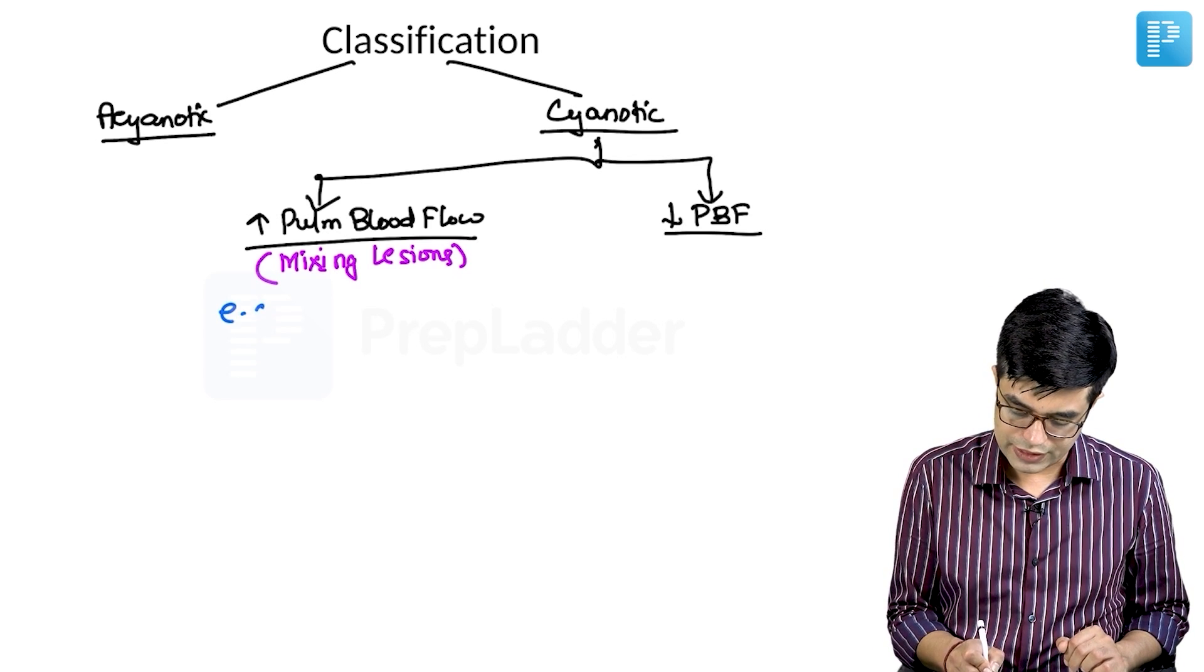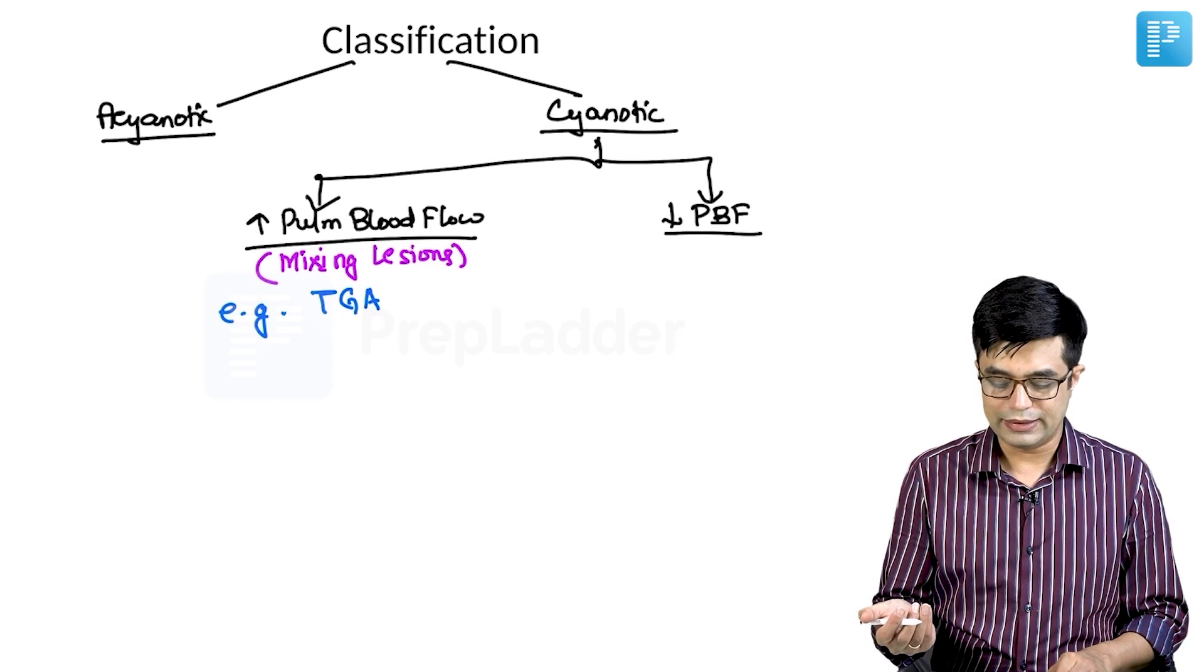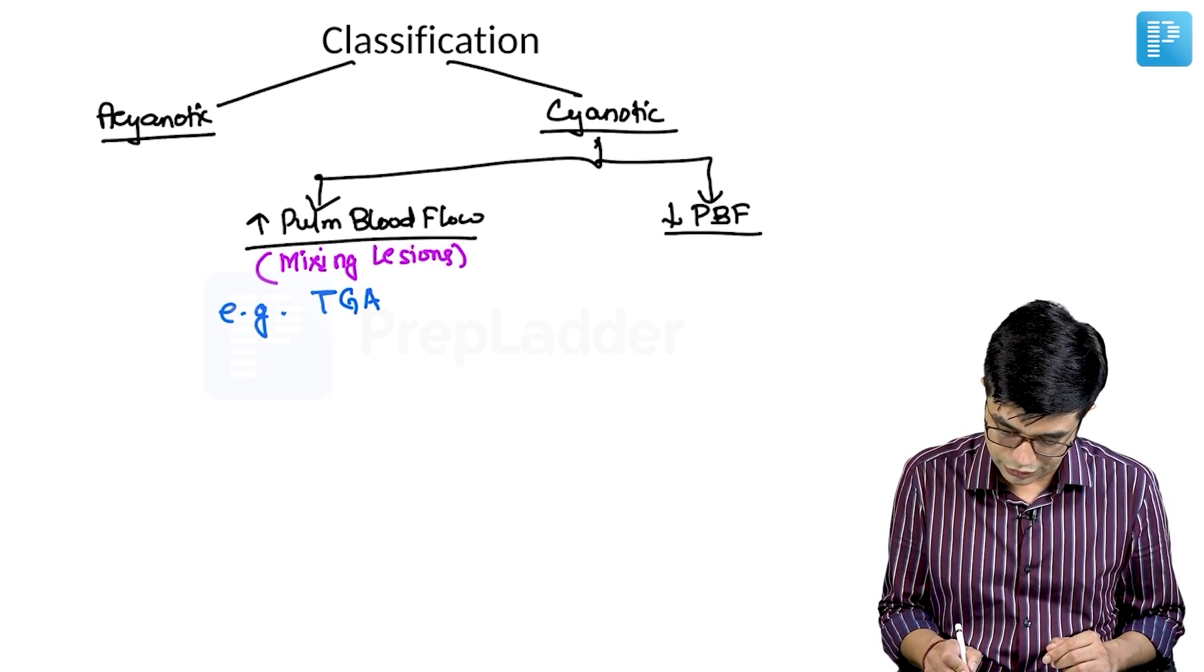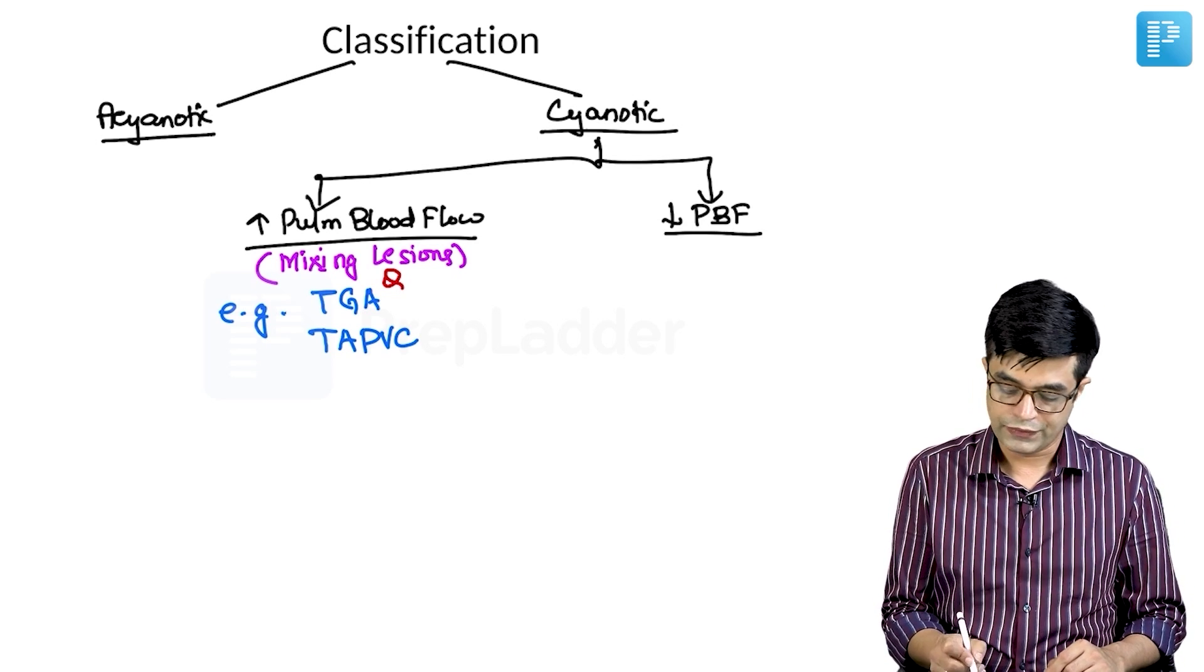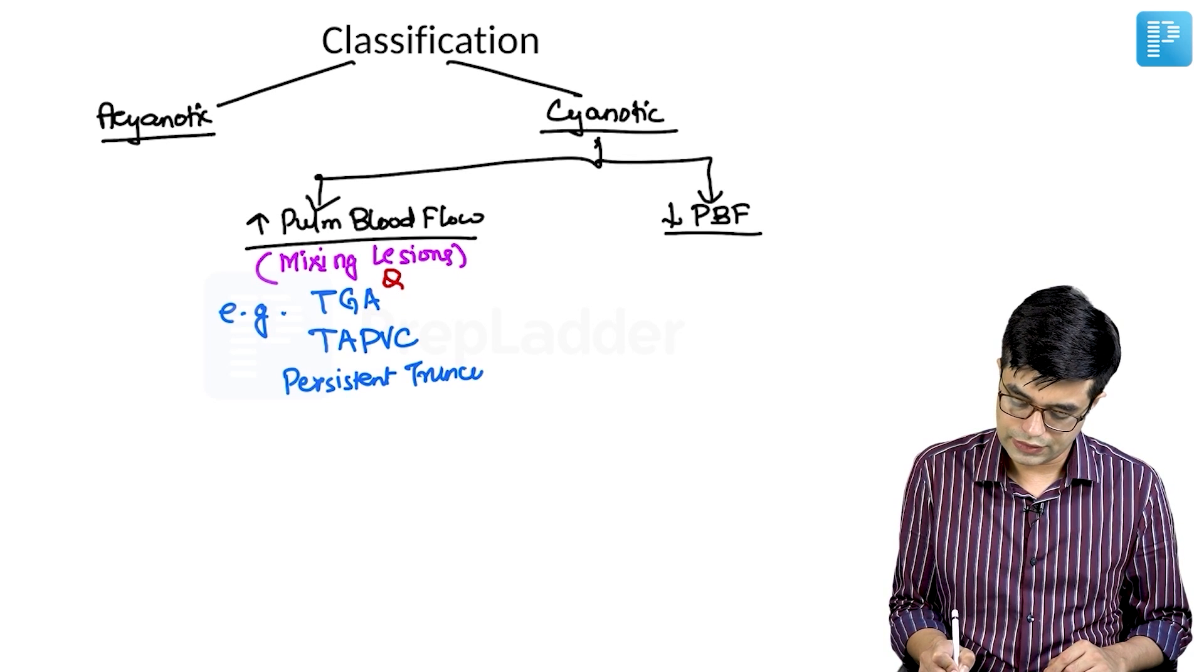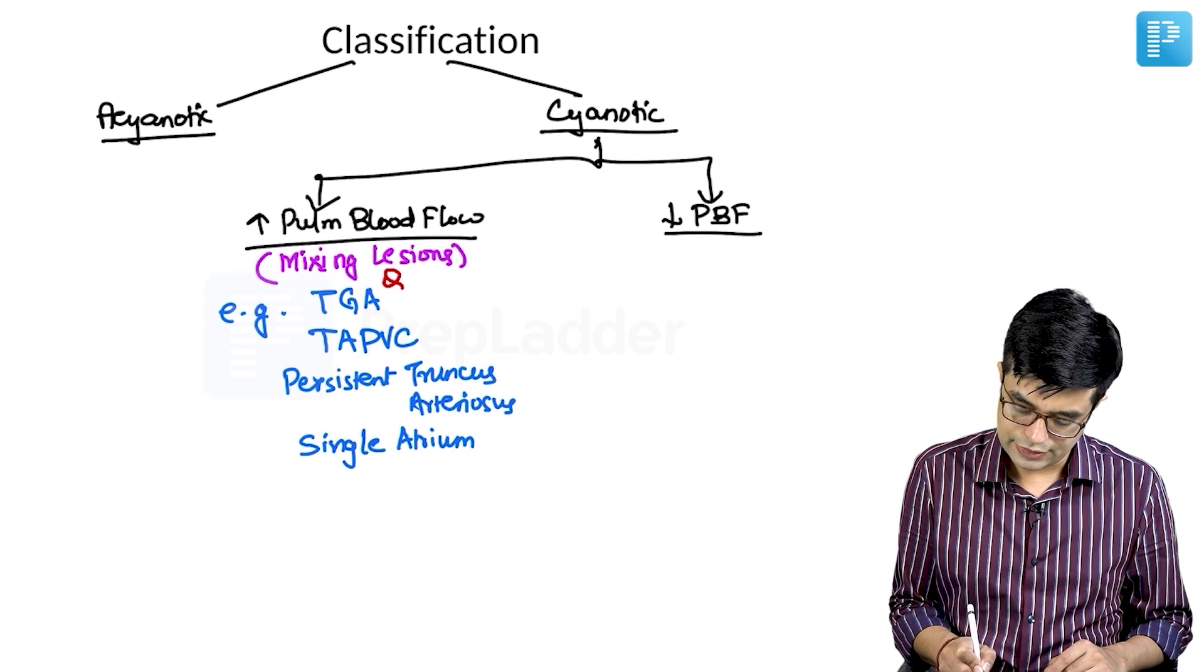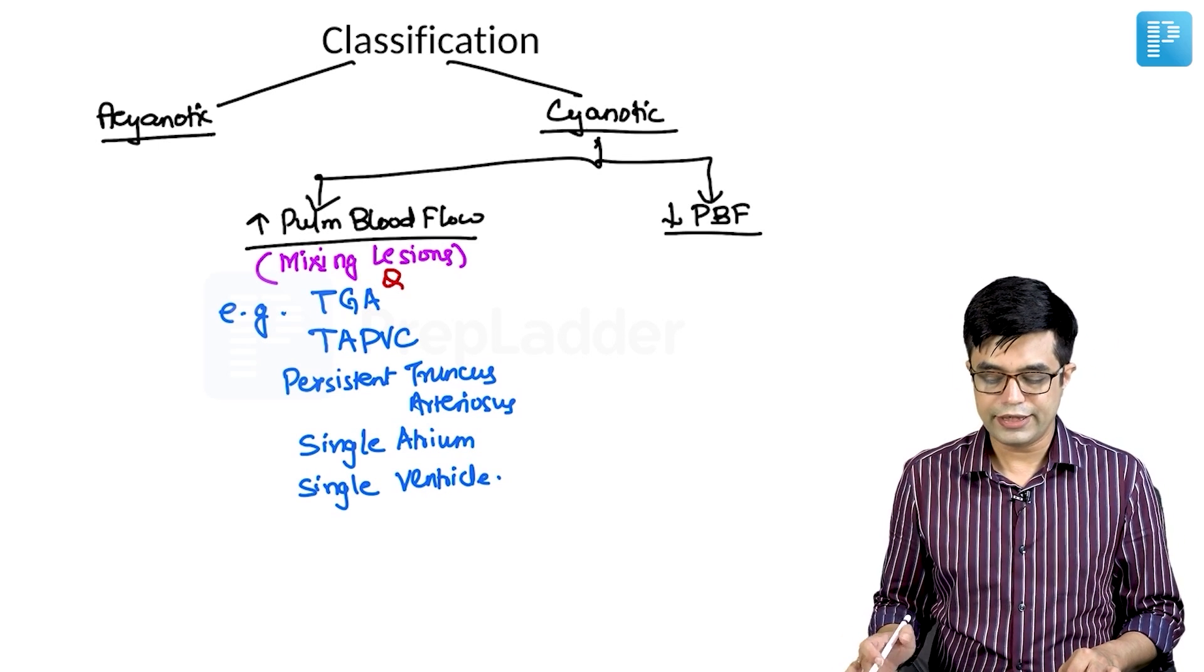It includes conditions like - since they are cyanotic, I am using a blue pen - transposition of great arteries. Most forms have increased pulmonary blood flow. There are exceptions to each one of them, but we are discussing the common general varieties. So TGA will be cyanotic with increased pulmonary blood flow. This is your MCQ point already asked in one of the old entrance exams. Then we have TAPVC, total anomalous pulmonary venous connection. Then we have persistent truncus arteriosus, also simply called truncus arteriosus. And it includes single atrial physiology and single ventricle physiology. They are all categorized as increased pulmonary blood flow.